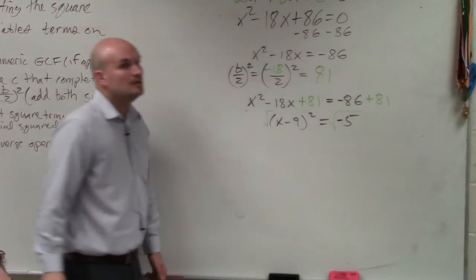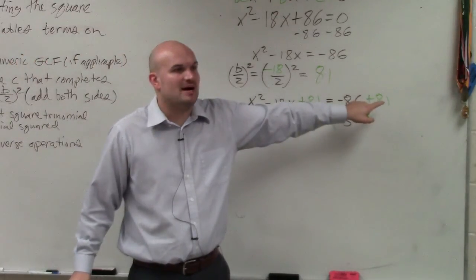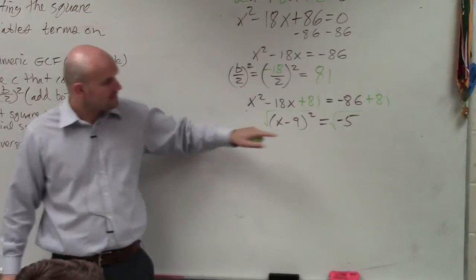Yes? How do you get negative 5 again? Negative 86 plus positive 81. So I take the square root.